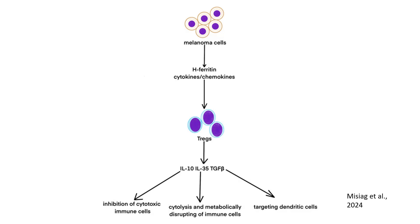The immunosuppressive cytokines interleukin-10, interleukin-35 and TGF-β disrupt immune cell metabolism and promote immune cell death, weakening the immune response. Tregs also suppress dendritic cells, which are crucial for presenting tumor antigens to activate other immune cells, preventing the activation of effective antitumor responses. Strategies to block Treg recruitment or neutralize their immunosuppressive cytokines are being explored to enhance the efficacy of anti-melanoma treatments.